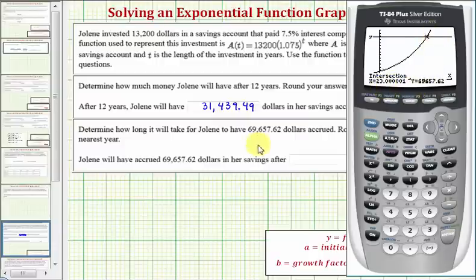And notice how the coordinates of this point of intersection are given here below. We're asked to round t to the nearest year. Remember, on the calculator, t is actually x. So we can see the account balance will reach this amount, or the amount of $69,657.62, after 23 years.